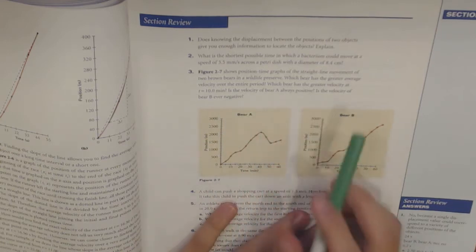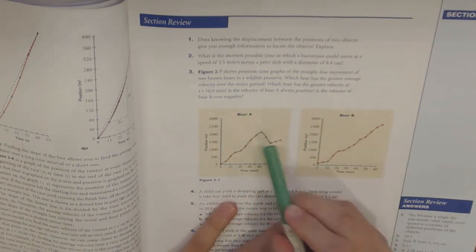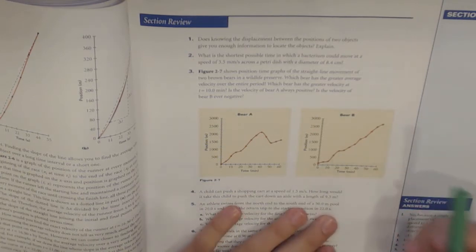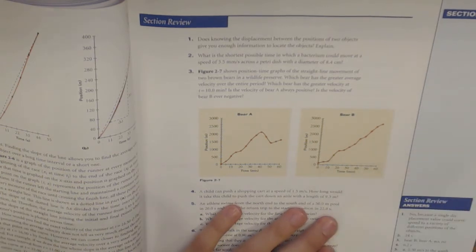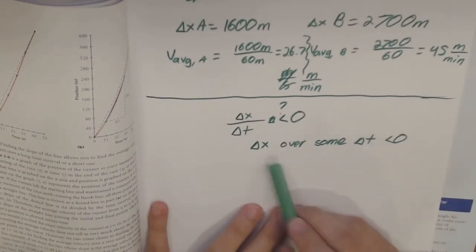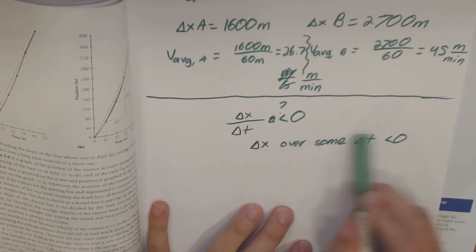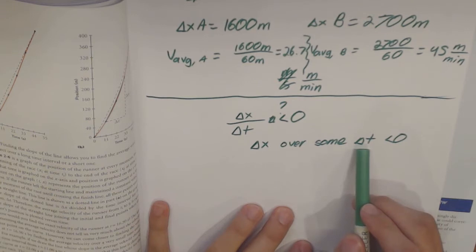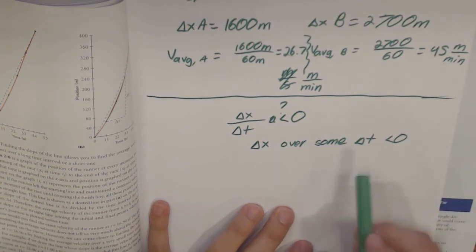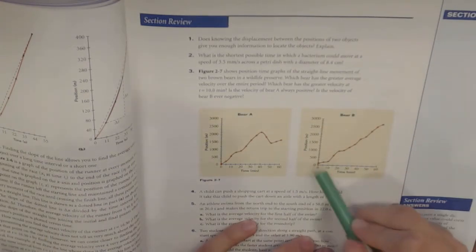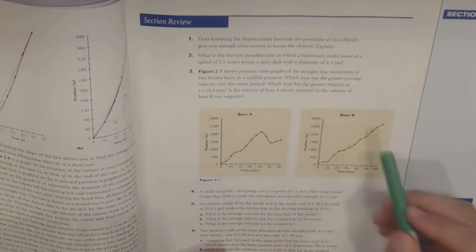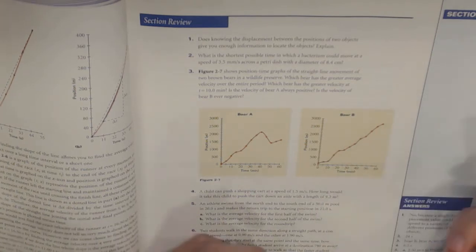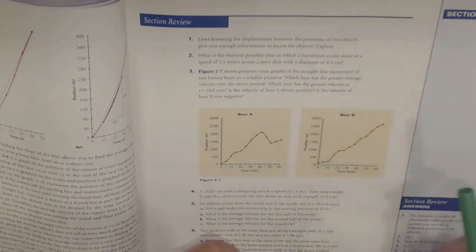Is the velocity of bear A always positive? No, because at this area the velocity is negative — his position drops from around 2,000 to around 1,400. The next part asks: is the velocity of bear B ever negative? Looking at the graph of bear B, we need to find some time interval delta T where delta X is less than zero — in other words, when is the graph going downwards? The graph doesn't go downwards anywhere, so the velocity of bear B is never negative.